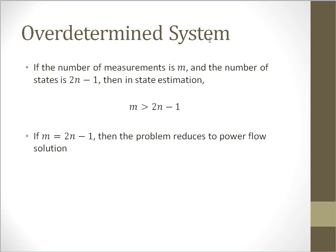State estimation is applicable for over-determined systems. What does it mean by over-determined system? If a system has more equations than the number of variables, then we call it an over-determined system. In our case, if we have more measurements than the number of states, then we call it an over-determined system. State estimation is applicable only for over-determined systems.